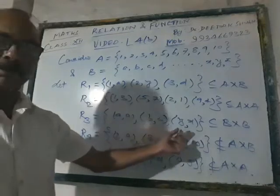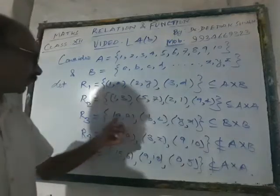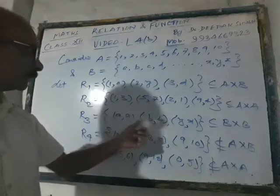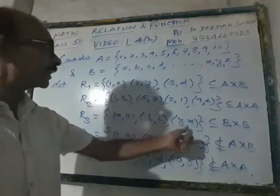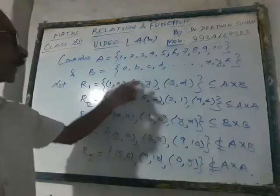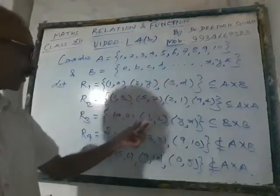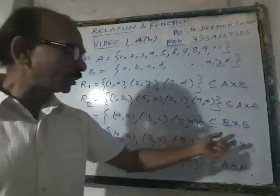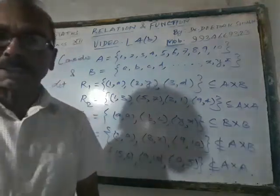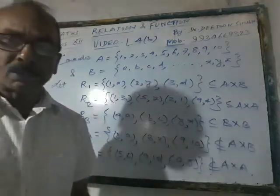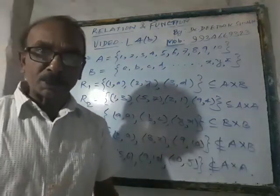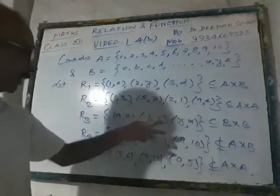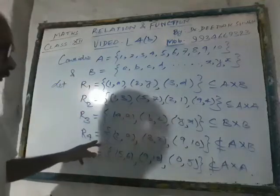Now what about R3? Just go on watching: a, b, c, and y, x — the first components a, b, and y as well as the second components a, c, and x — all of them are from the set B. Naturally, R3 is a subset of B cross B, so R3 is a relation over the set B. So R2 and R3 are binary relations on their respective sets.